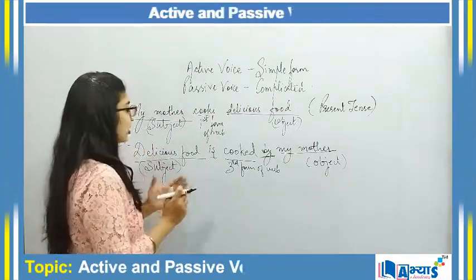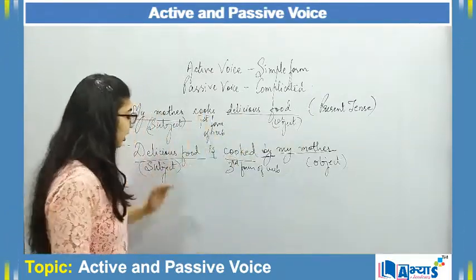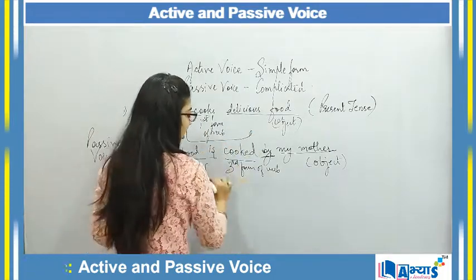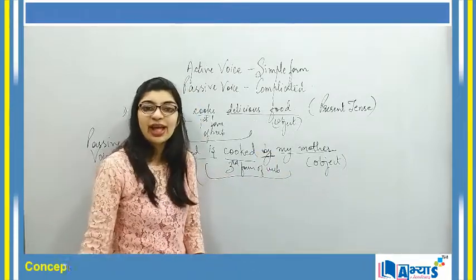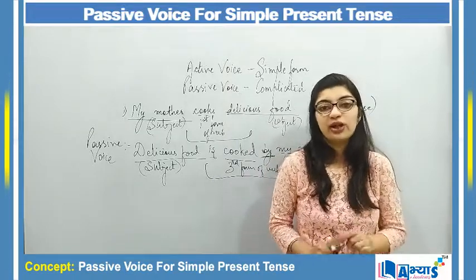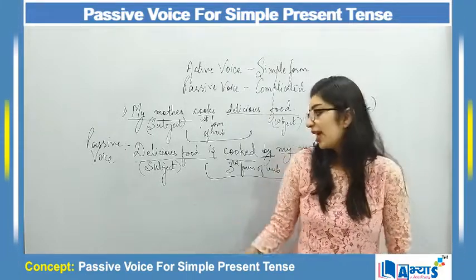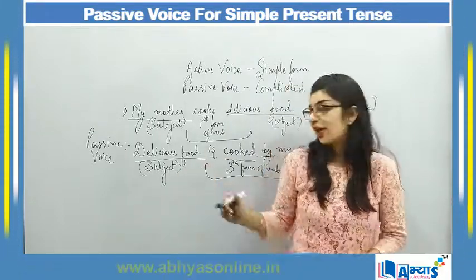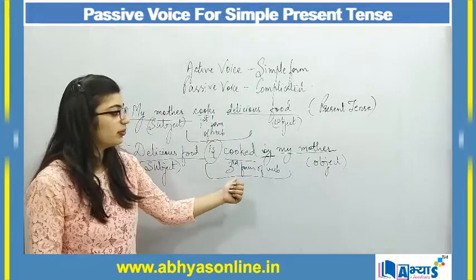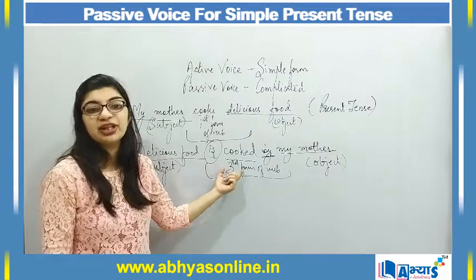The only difference between active and passive voice is that their structure changes. In active voice the structure is: subject + first form of verb + object. In passive voice it changes to: subject + 'is' + third form of verb. The meaning remains the same — the meaning should never change when you convert from one voice to another. And to keep the present tense, we use 'is' + third form of verb.